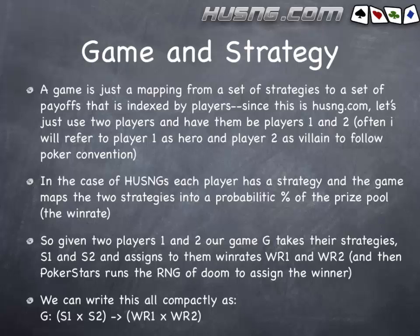Since this is HUSNG.com, let's use two players — player one and two. I'll often refer to player one as hero and player two as villain, to follow poker convention. Game theory gets more complicated with more players, so I'm going to focus on two-player stuff for heads-up sit-and-go applicability. Each player has a strategy, and the heads-up sit-and-go maps those two strategies into a probabilistic percent of the prize pool — your win rate. That's probably the best way to think of our payoff.